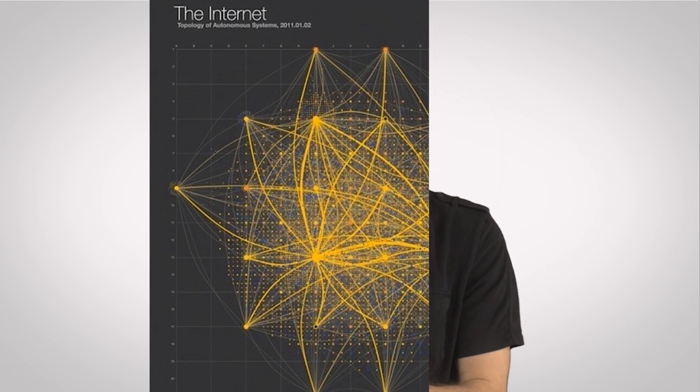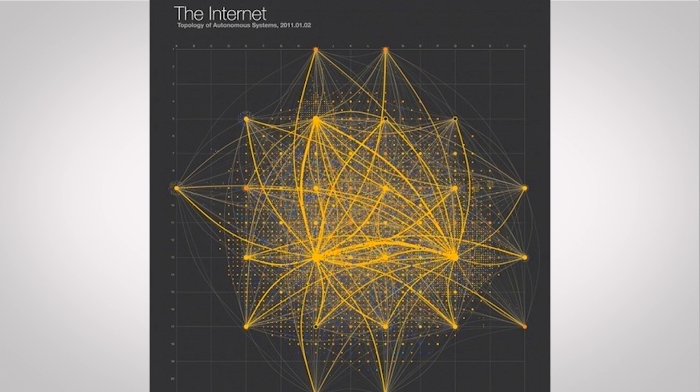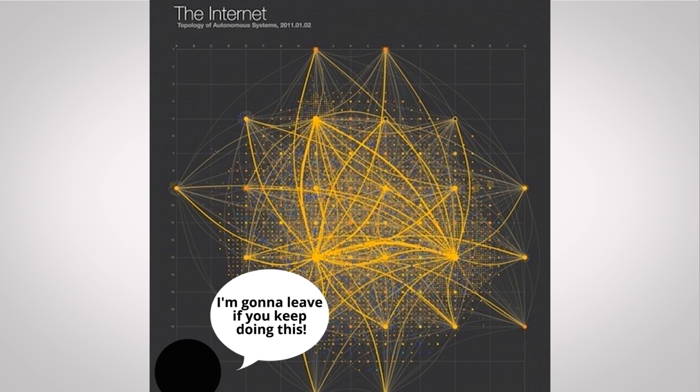But first, the origin of the term cloud. My theory is that it exists because it's easier to draw a cloud on a network diagram than to draw this, which is a visual representation from Pier 1 of the way many nodes are connected to each other on the internet.